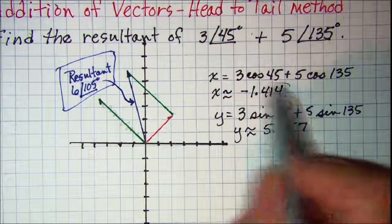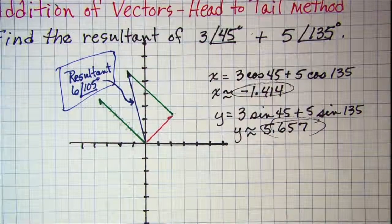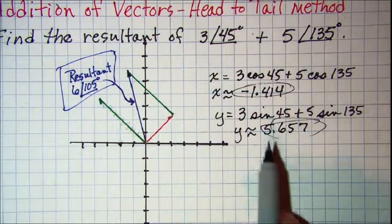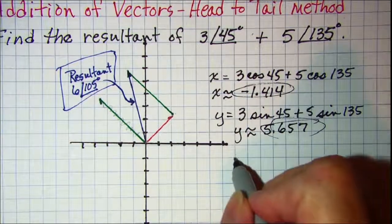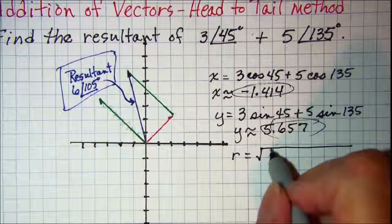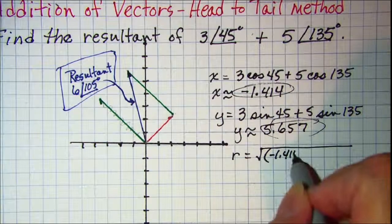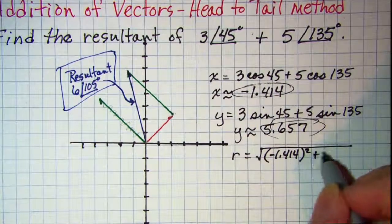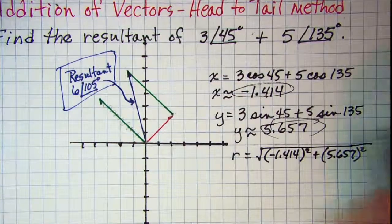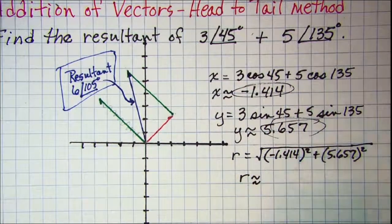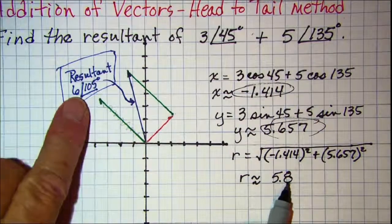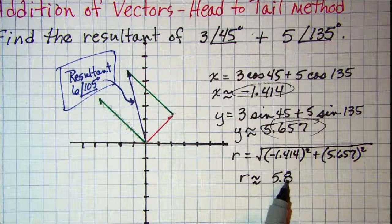So this x value and this y value I need to change that back to polar to see if I get close to this resultant that I did with the head and tail method. My r value is going to be the square root of negative 1.414 quantity squared plus 5.657 squared. So my r comes out to be approximately 5.8, so that was pretty close to what I got when I did the head to tail method.